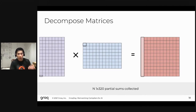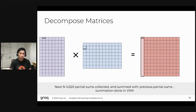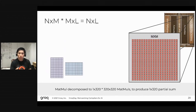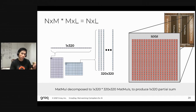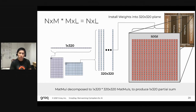This process is repeated for the entire column of the first matrix, yielding a full column of results at the output. Then we continue to the next 320×320 tile and the process repeats. On hardware, this is shown as a zoomed-in view into the MXM plane — an extremely efficient 320×320 circuit for matrix multiplies of that size. We extract a 320-element vector from the first matrix and a 320×320 tile from the second, and install those weights onto the 320×320 MXM plane.